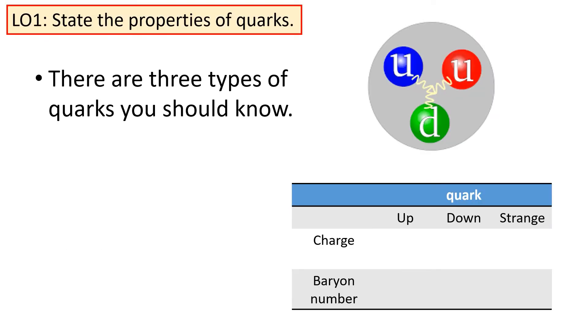To start with, there are three types of quark you should know: up, down, and strange. They have the charges plus two-thirds, minus a third, and minus a third. They also have another quantum number, baryon number. Each of these quarks has a baryon number of plus a third.